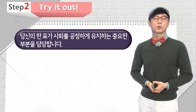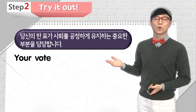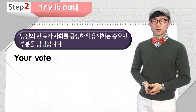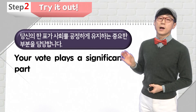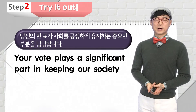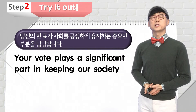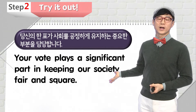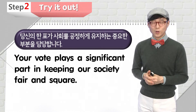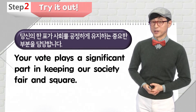당신의 한 표가 사회를 공정하게 유지하는 중요한 부분을 담당합니다. your vote, 중요한 important 아니면 key, major 다 가능합니다. plays a significant part. significant는 의미심장한이란 뜻이잖아요. 뭐에 있어서 그렇다는 거예요? 바로 keeping our society 우리의 사회를 유지하는 거죠. fair 공정하게, 그리고 fair and square라는 표현이 있습니다. 이게 공정하게 라는 뜻으로 쓰이는 거니까, 여러분 투표를 통해서 생각을 보여주시면 되겠습니다.